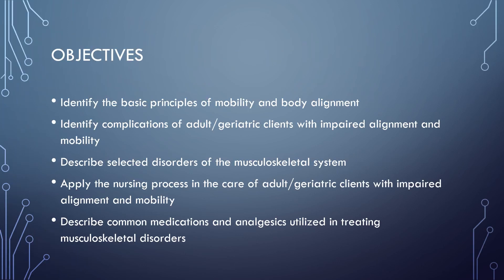Here are the objectives for Musculoskeletal. We'll identify the basic principles of mobility and body alignment, identify complications of adult geriatric clients with impaired alignment and mobility, describe selected disorders of the musculoskeletal system, apply the nursing process in the care of the adult and geriatric client with impaired alignment and mobility, and describe common medications and analgesics utilized in treating musculoskeletal disorders.